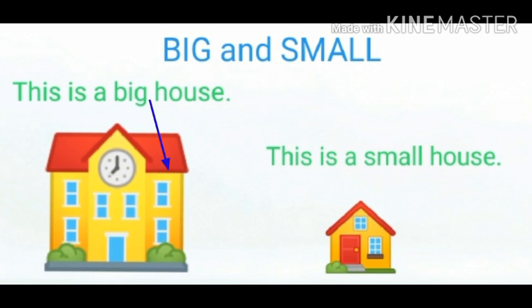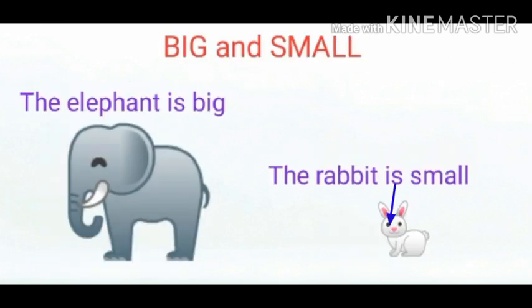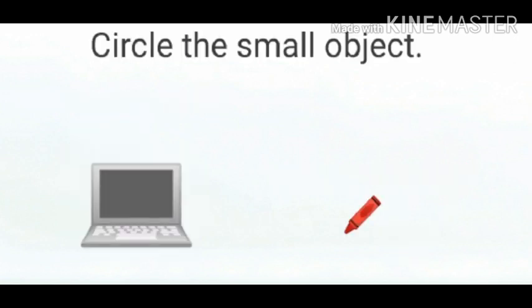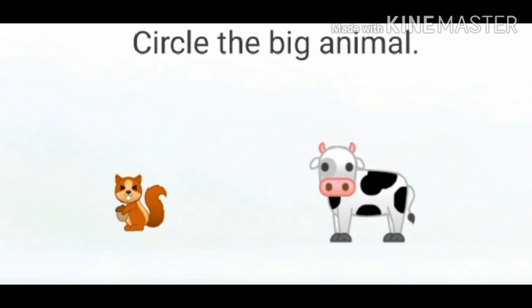This is a big house. This is a small house. The elephant is big, the rabbit is small. Circle the small object. Circle the big animal.